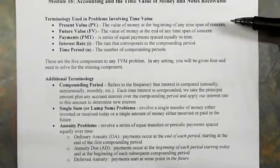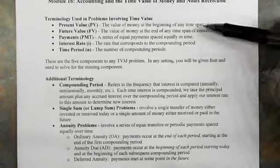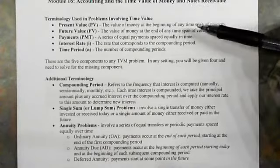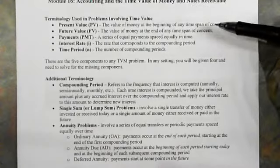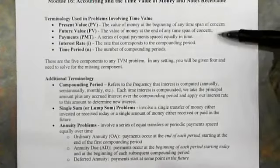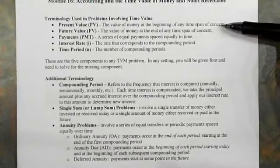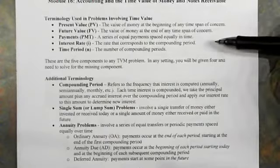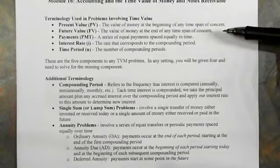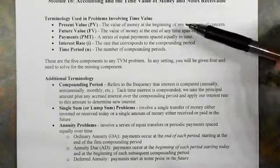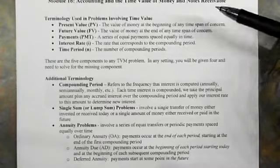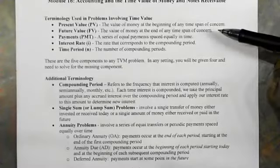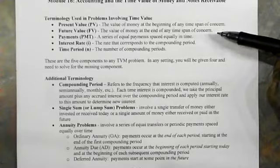Present value is the amount of money at the beginning of a time span of concern. Future value is the money at the end of a time span of concern. In accounting, what we're going to be talking about are 10-year bonds, a three-year note. What we're talking about is the value of the money at the beginning of the deal and at the end of the deal, or at the maturity of the note or bond.